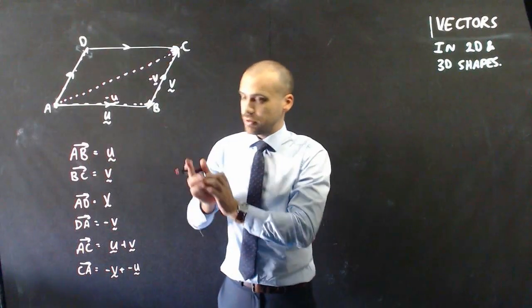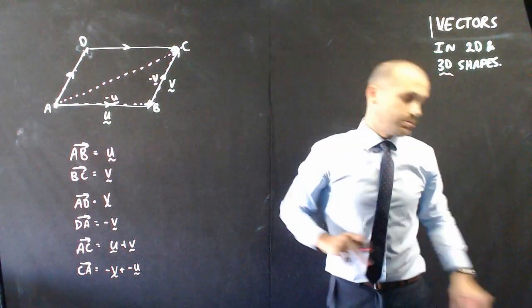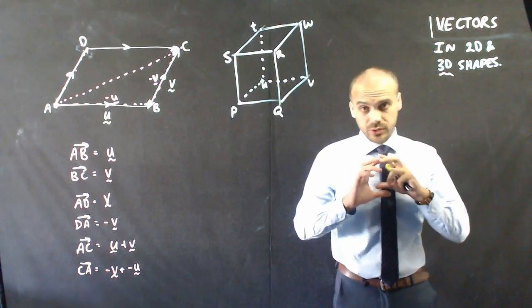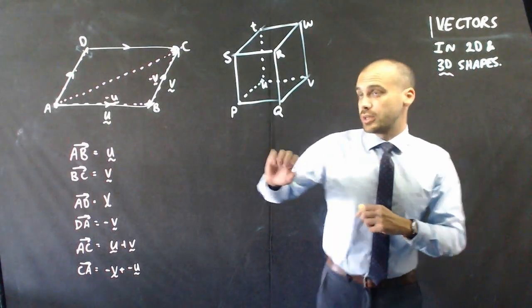Alright, so there's a parallelogram, but I said we were going to do 2D and 3D shapes. So vectors don't only have to exist in two dimensions. Three dimensions is where we use vectors a lot. Here's a cube.